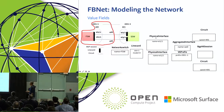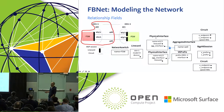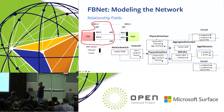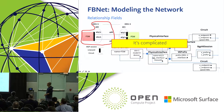Each object has fields to specify properties like the name of the interface and the speed of the circuit. We also have fields to define relationships between different objects — for example, bundling two physical interfaces into an aggregated one. This is the complete picture for half of the circuit. Imagine this is only half of the circuit and we're doing this for the whole Facebook network — it's pretty complicated, and of course we need software to help.